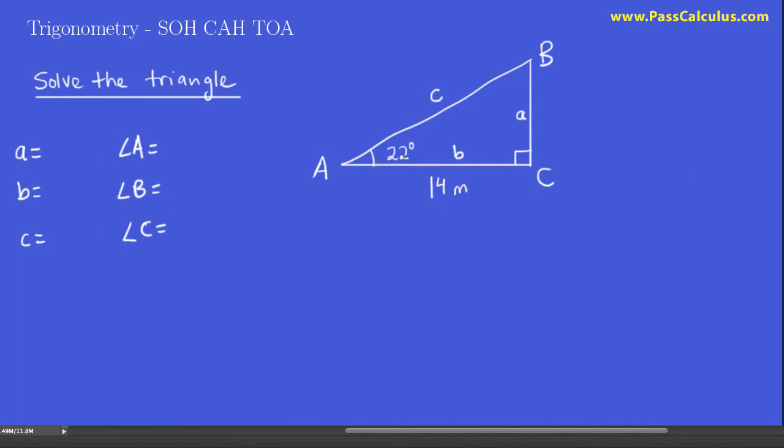Like for example, right here, this 22 degrees, that's the value of angle A, so we can fill that in right away. We know this side, little b is 14. So 14 meters. And also we know angle C, right? It's 90 degrees.